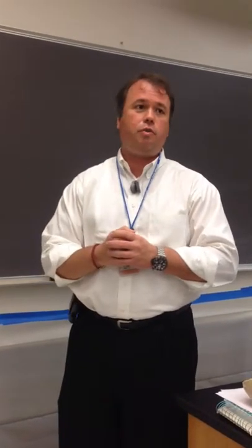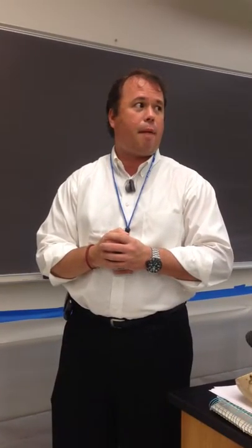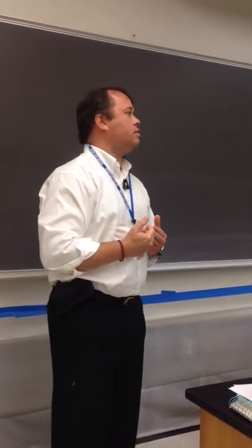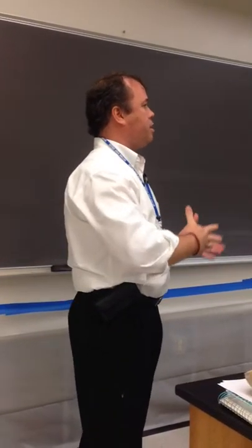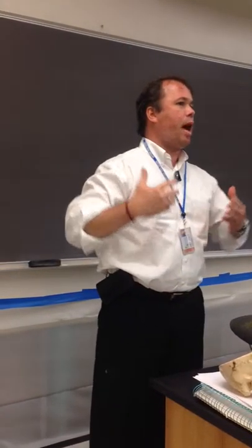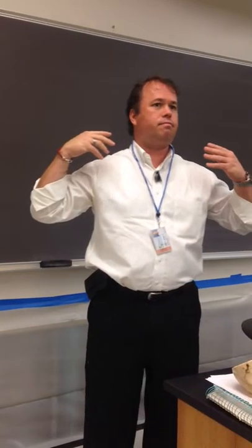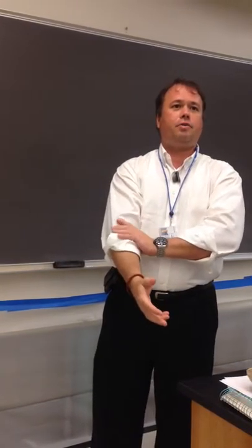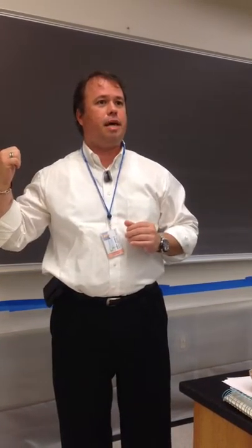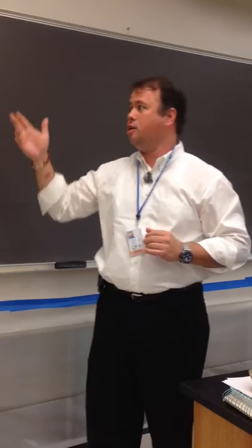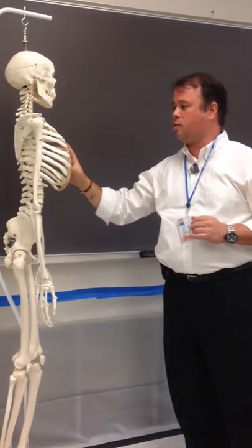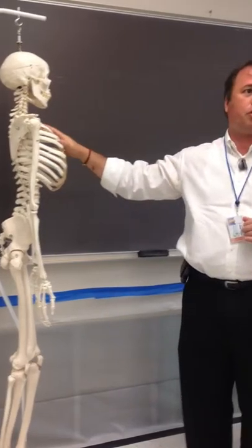For those of you who missed or want to review, this is going to be the chapter on the axial skeleton. When we talk about the skeleton, we have the appendicular and the axial. The appendicular has 126 bones, and the axial is going to be 80. The axial is going to be the skull, the vertebral column, and including the ribs and the sternum.